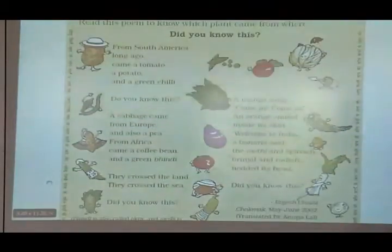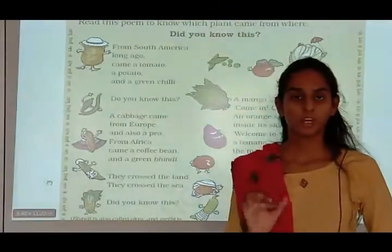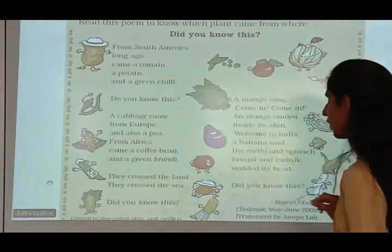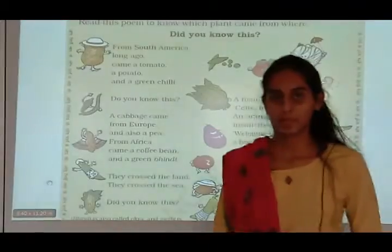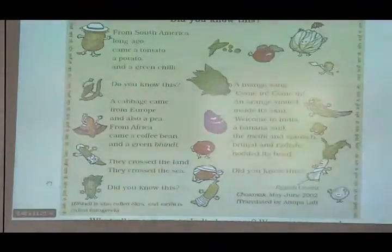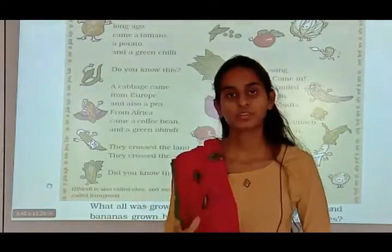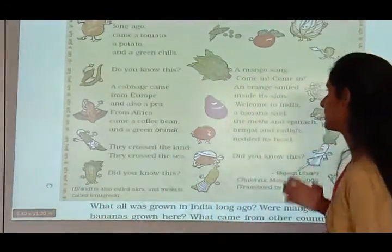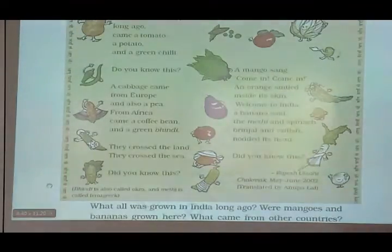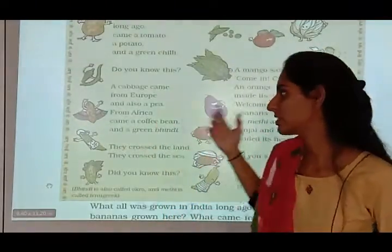From South America came tomato, potato, and green chili. From Europe came cabbage and pea. From Africa came coffee bean and green bhindi. They crossed land and sea — from another country they came to India. A mango says 'Come in, come in.' An orange smiles inside its skin. Welcome to India — banana, tomato, spinach, brinjal, and radish nodded their heads. Welcome to all these seeds. Did you know this?